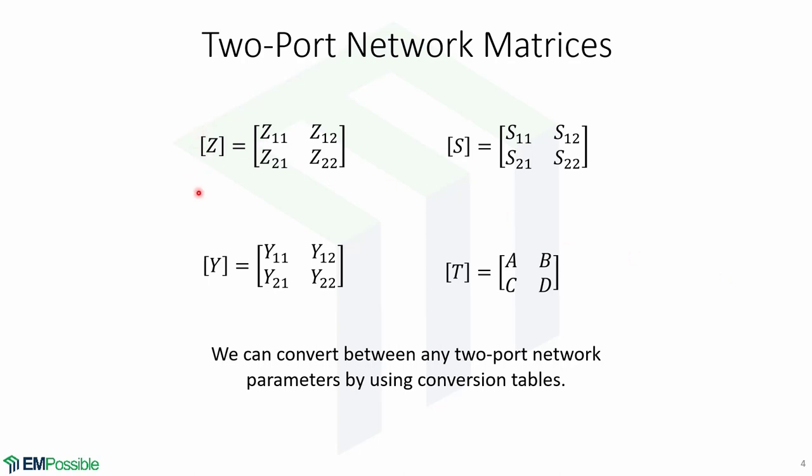Here is the 2x2 impedance matrix, the 2x2 scattering matrix, the 2x2 admittance matrix, and the 2x2 transmission matrix. We can convert between any two-port network parameters by using the appropriate conversion table.